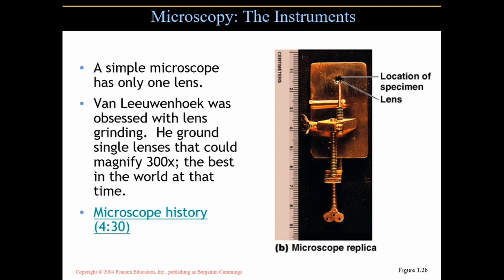He loved grinding lenses, and he could grind lenses better than anyone in his day. Nobody was making lenses as good as van Leeuwenhoek's lenses. He took single lenses, ground them into spherical structures, polished them, and inserted them into his microscopes. They were single lenses that could magnify about 300 times, which in the late 1600s were the best in the world by far. This is a replica of one of his — about four inches from top to bottom.